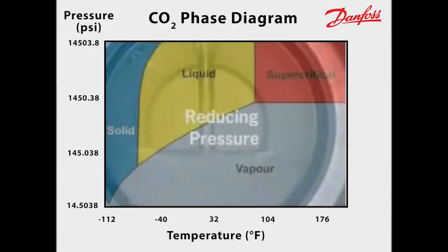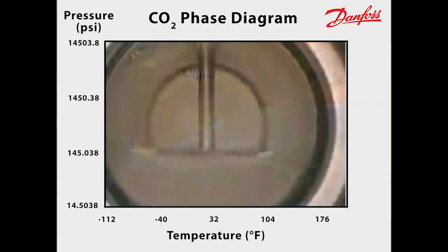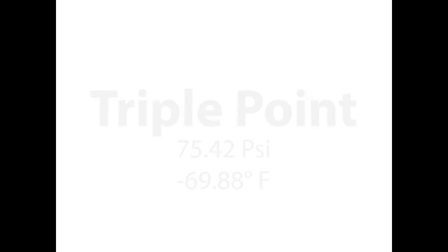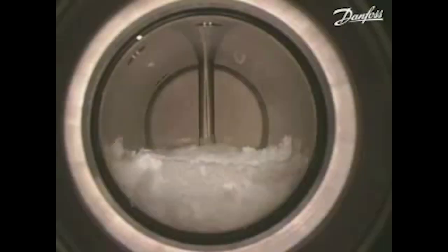The triple point is reached with a further reduction in pressure and temperature. The system has now moved further down the vapor-liquid equilibrium line. Solid CO2 begins to form once the pressure of 75.42 PSIA and a temperature of negative 69.88 degrees Fahrenheit have been reached. The triple point is the only pressure and temperature combination at which solid, liquid, and vapor CO2 can exist simultaneously in equilibrium. As the pressure continues to fall below the triple point, only solid and vapor are present in the cell. Solid CO2 is also known as dry ice.